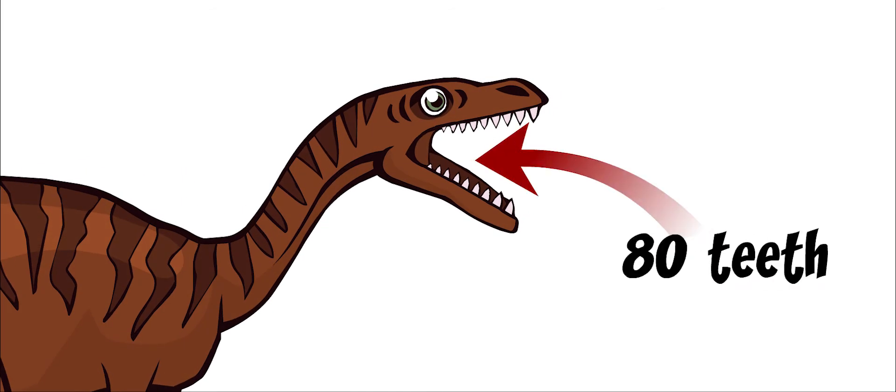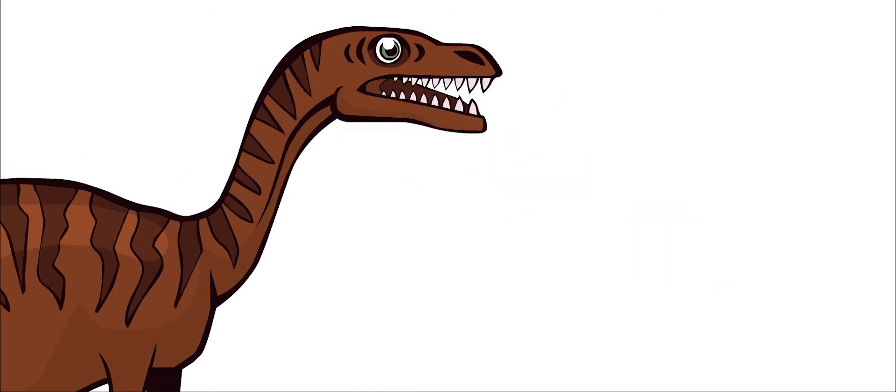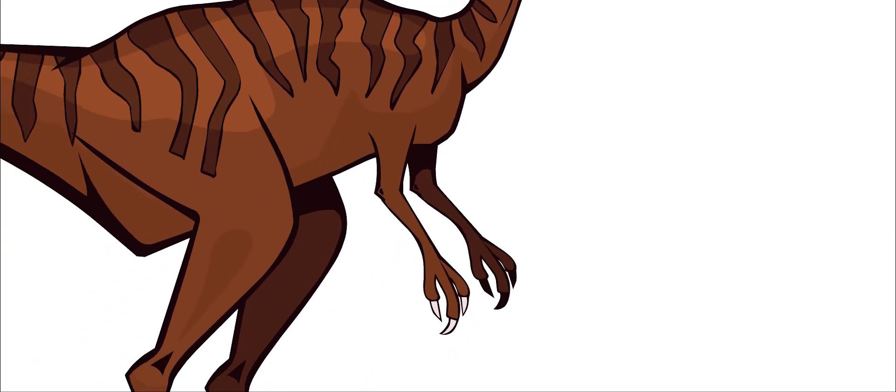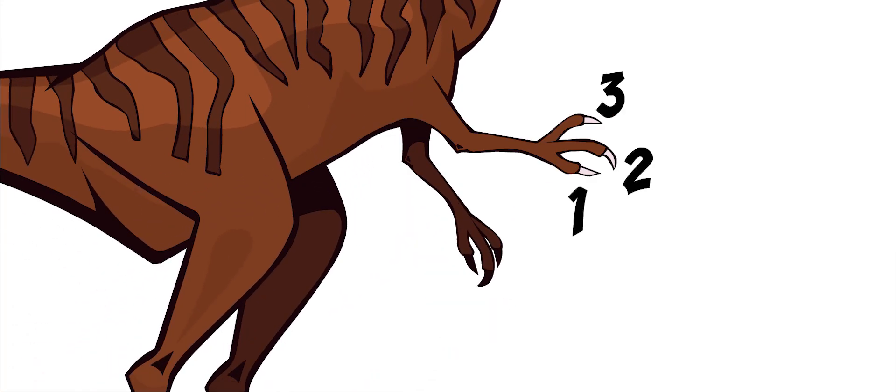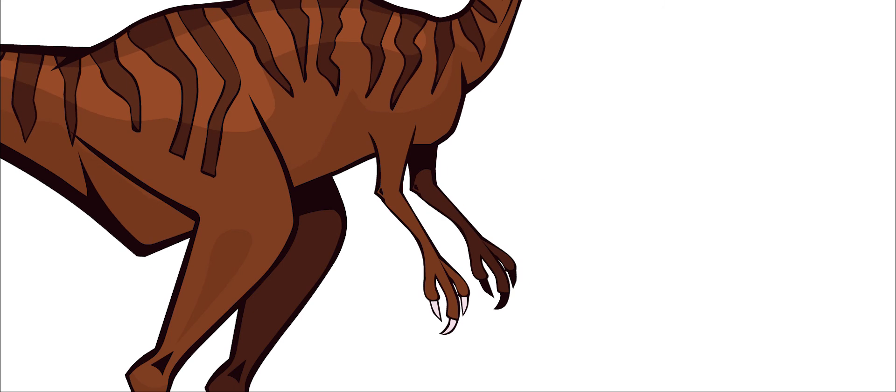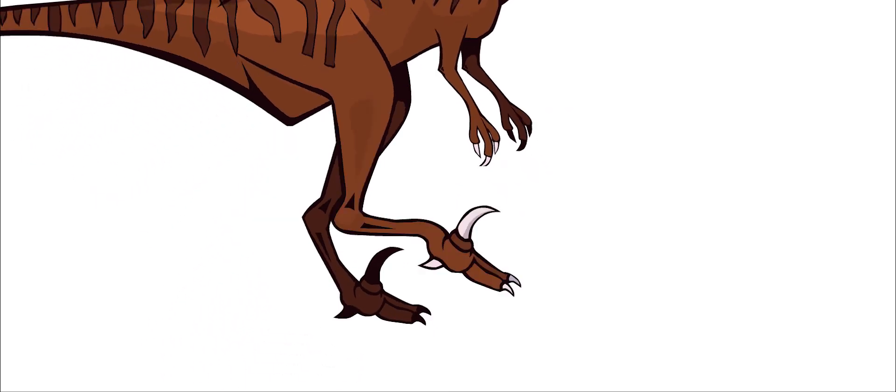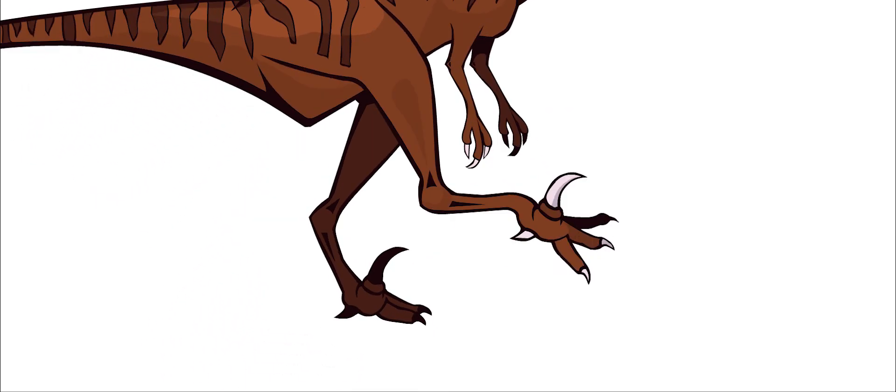Some of its teeth were over an inch long. It had small, three-fingered hands and sharp claws. It also had sharp claws on the four toes of its feet. It often used the sharp claws to slash at the animals it hunted.